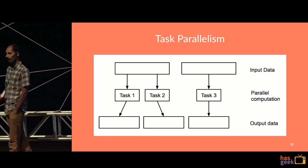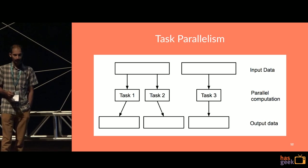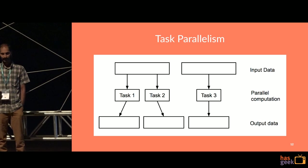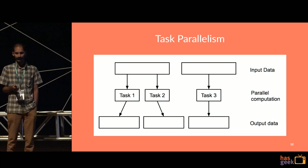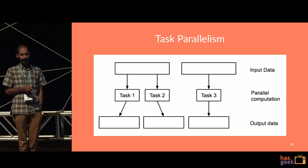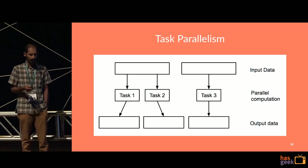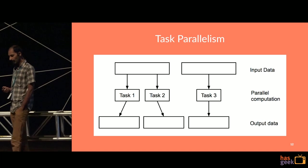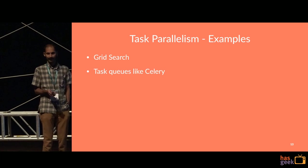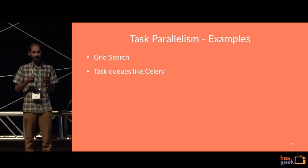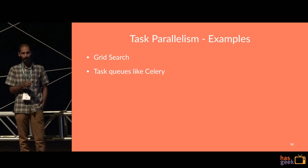In task parallelism, you have different tasks that can be executed in parallel. They can take the same data or different data — what matters is they run at the same time, either on the same machine or across a cluster. Grid search is a classic example of task parallelism because you're building many different models with different parameters, and each one is an independent task. Task queues like Celery in Python work the same way — you have a queue of tasks to be executed, and workers pick them up and execute them.